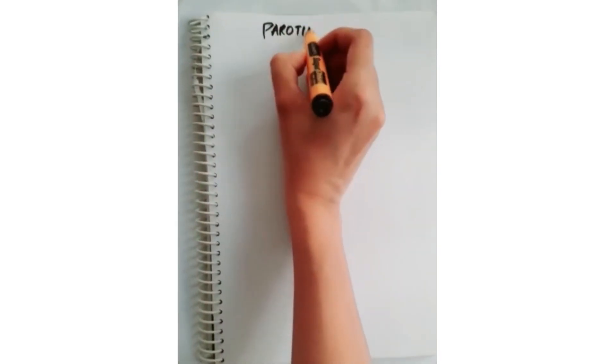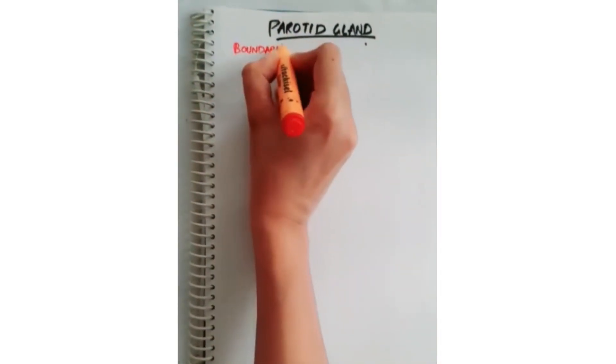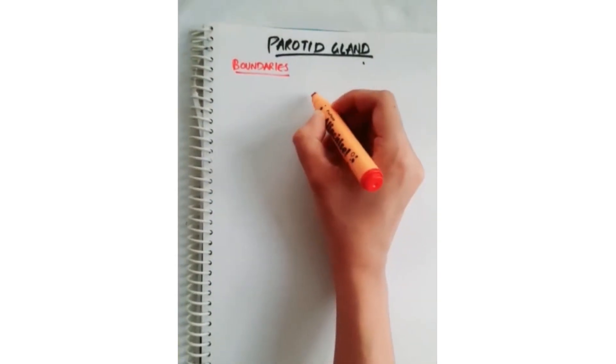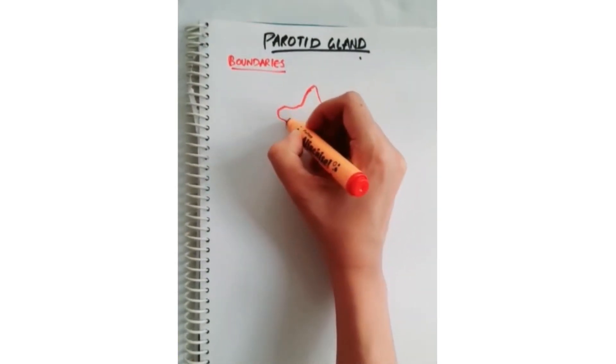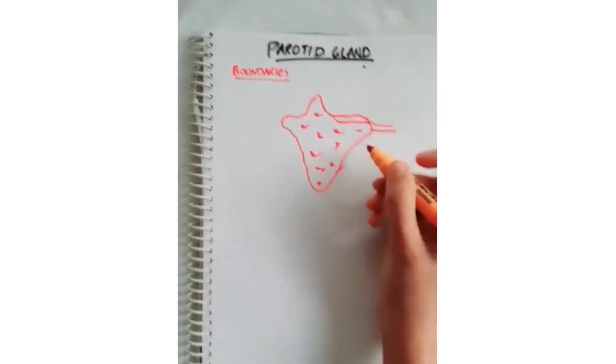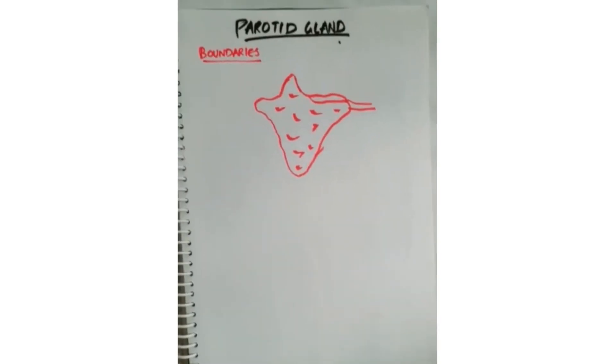Today's video is about how to draw fast and easy diagrams regarding parotid glands boundaries. Draw your parotid gland first — you can also remember this structure as that of the India map. Also draw the parotid duct laterally.